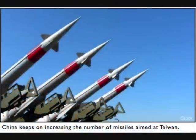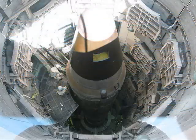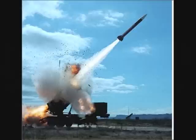The missile knows where it is at all times. It knows this because it knows where it isn't. By subtracting where it is from where it isn't, or where it isn't from where it is, whichever is greater, it obtains a difference or deviation.